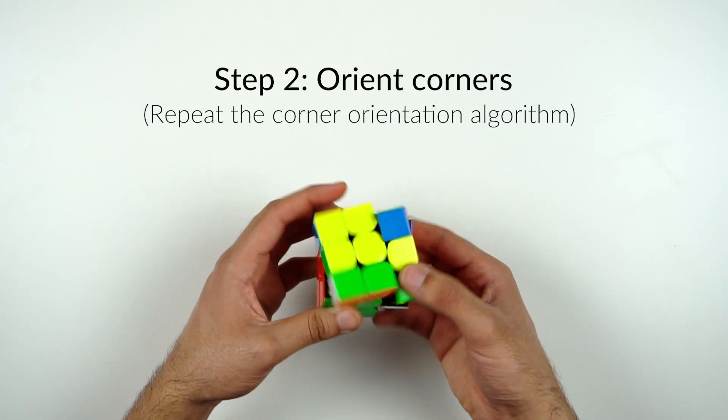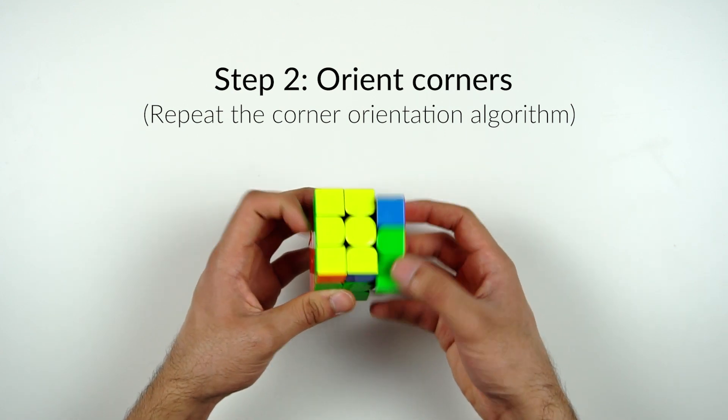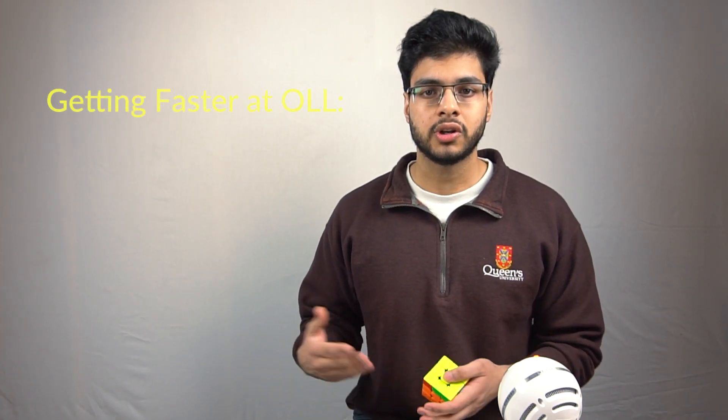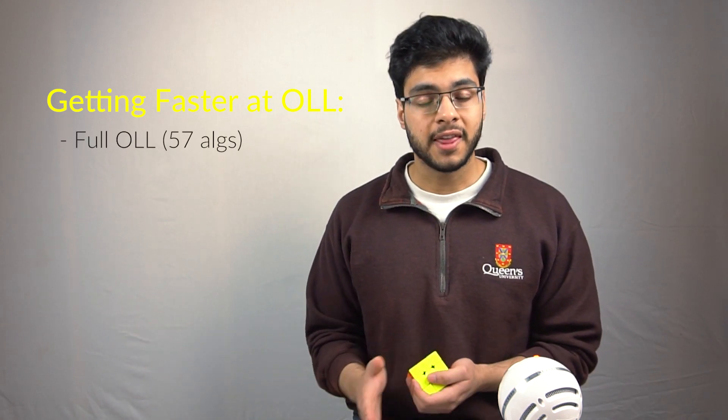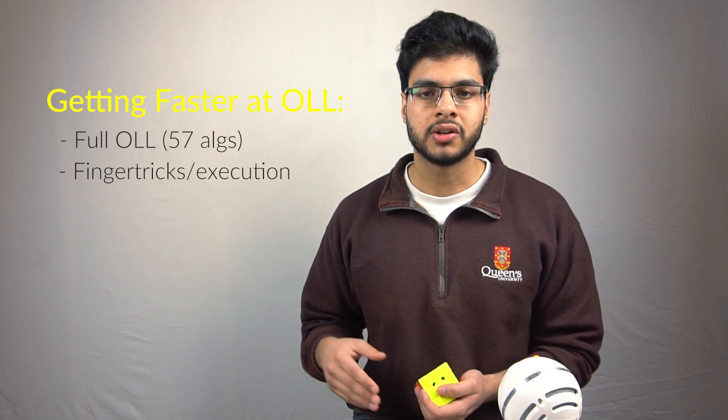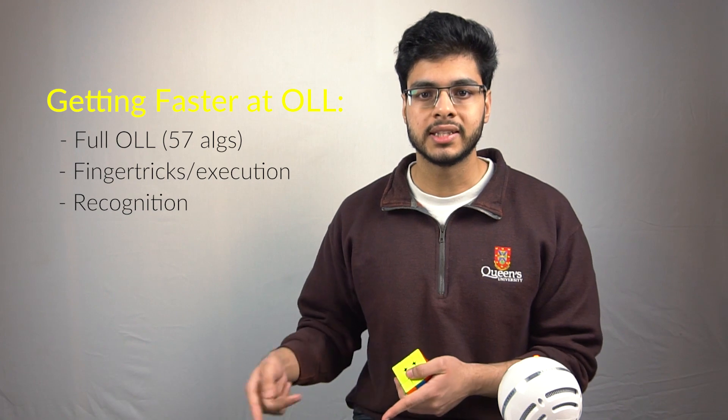This is useful because instead of having to learn 57 different OLL algorithms, you only have to learn two, one for the edges and one for the corners. The obvious way to get faster at OLL as a beginner is to learn more algorithms and work your way up to all 57, and then after that you can improve even further by working on your finger tricks, your recognition, and also solving your F2L so that it gives you an easier OLL case.